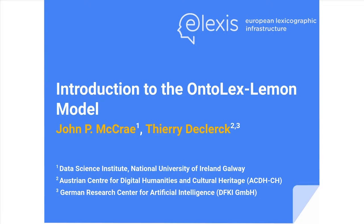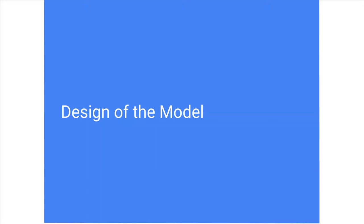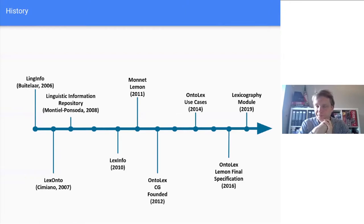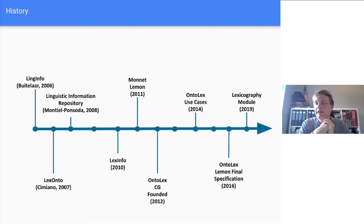I'll talk a little bit about how we designed the model and how we got to it. It started off with some independent work: LingInfo from Port Boitela, LexOnto from Philip Simiano, and the Linguistic Information Repository, or LIR, developed in Madrid by Elena Montiel-Pensauda. These three people came together and realized they were trying to solve the same problem. We had a project called Monnet, which led first to the LexInfo model, and then finally to the core model called Monnet Lemon, which is the model I'm going to talk about today, released in 2011.